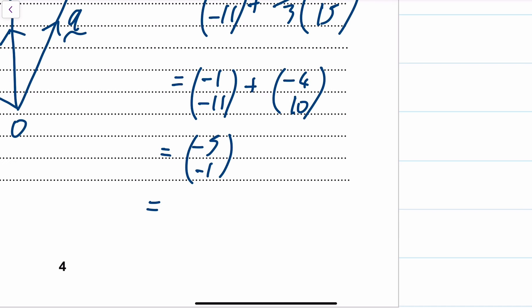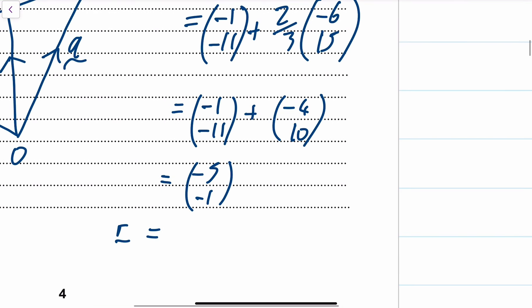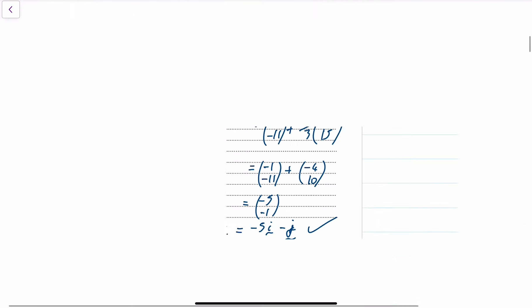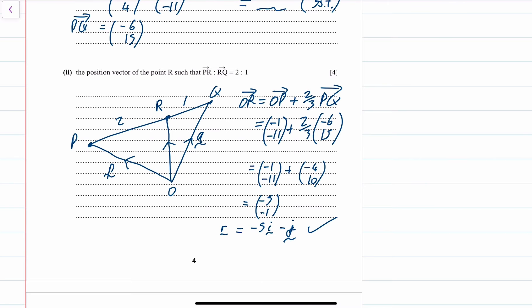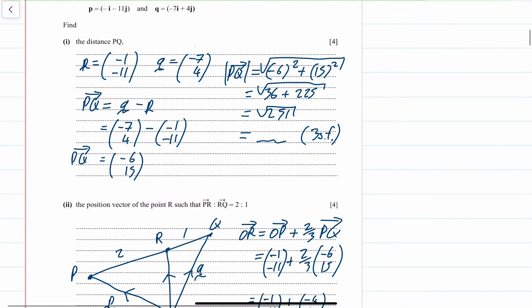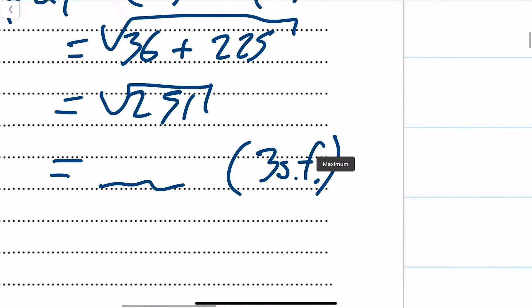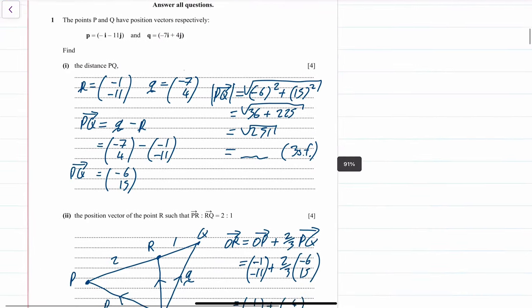So R equals minus 5i minus j. Find the position vector of R, done. We had to find PQ, done. That is question 1, done.